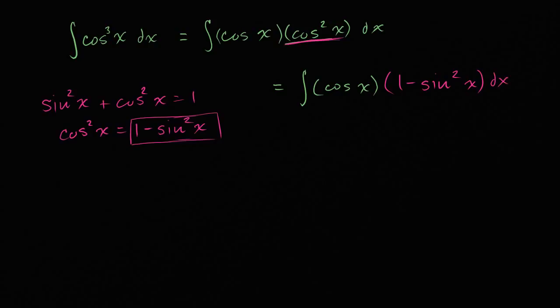And so what is this going to be equal to? This is going to be equal to the indefinite integral of cosine x, I'm just going to distribute the cosine of x, cosine of x minus cosine of x sine squared of x, sine squared x, and then I can close the parentheses, dx.